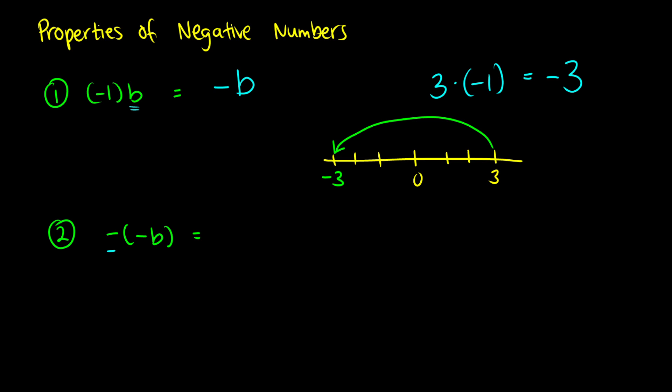Now when you take a negative and multiply it by a negative number such as negative b, you get the positive version back — positive b. Another way of thinking about this is negative 1 times negative 1 times b. You can multiply negative 1 and negative 1 together to get 1 back. Or step by step: negative 1 times b is negative b.